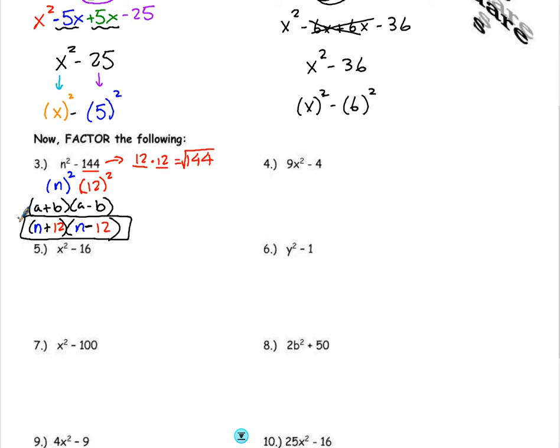This type of factoring is very pattern-based. If you can recognize and find the patterns, it's a quick way to factor problems. When I look at, for example, number 4, 9x squared minus 4, I recognize 9 as a perfect square—that's 3. x squared is x being squared, so what's being squared is 3x. Here I have a 4, and when I take the square root of 4, I get 2. So my pattern is 3x plus 2 times 3x minus 2.